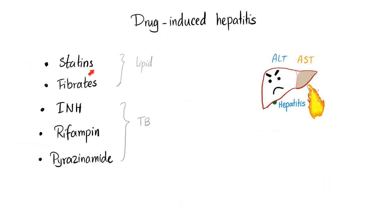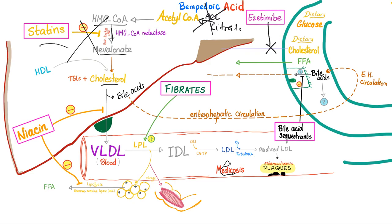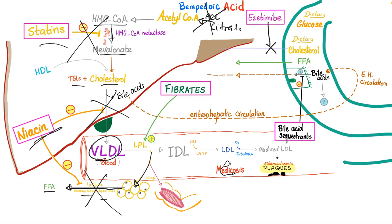Drugs that can cause drug-induced hepatitis: statins, fibrates, INH, rifampin, and pyrazinamide. In the full pathway summary: ezetimibe inhibits dietary cholesterol absorption; bempidoic acid inhibits ACL (citrate → acetyl-CoA); statins inhibit HMG-CoA reductase (acetyl-CoA → mevalonate); niacin inhibits VLDL formation and also inhibits hormone-sensitive lipase (lipolysis in adipose tissue). Niacin is a vitamin at low dose and a lipid-lowering agent at high dose. Fibrates stimulate LPL to break down VLDL.